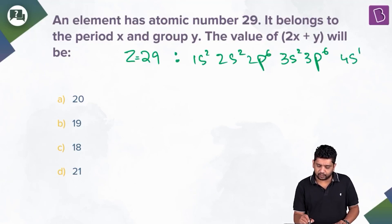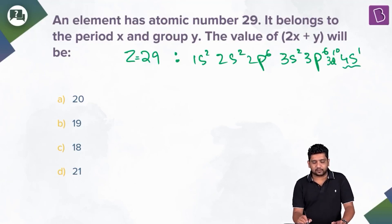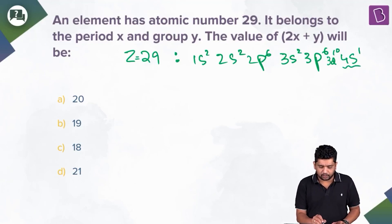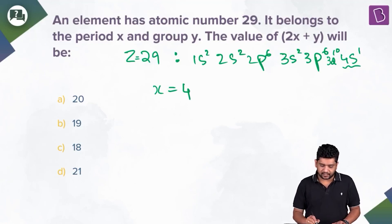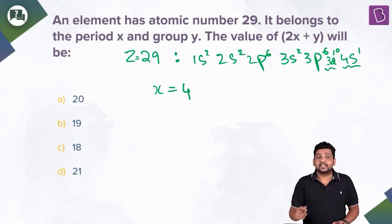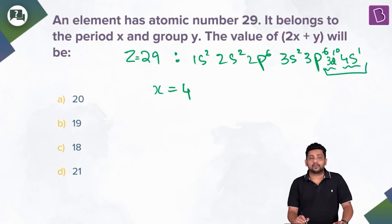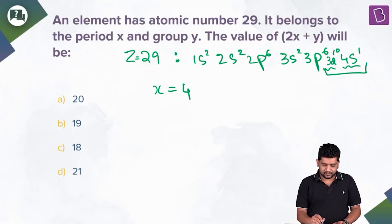The highest principal quantum number is 4, so it belongs to period 4, meaning x = 4. For the group number, since this is a d-block element and the last electron went to 3d¹⁰, this is the copper family. The group number is obtained by adding d electrons and s electrons: 10 + 1 = 11, so y = 11.